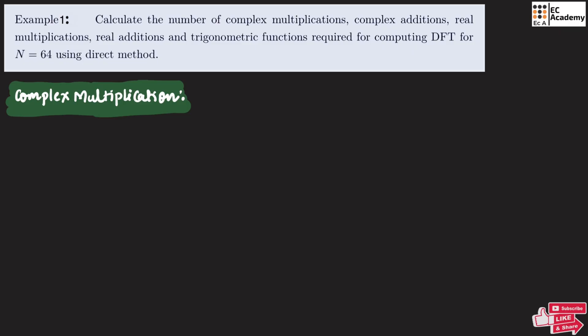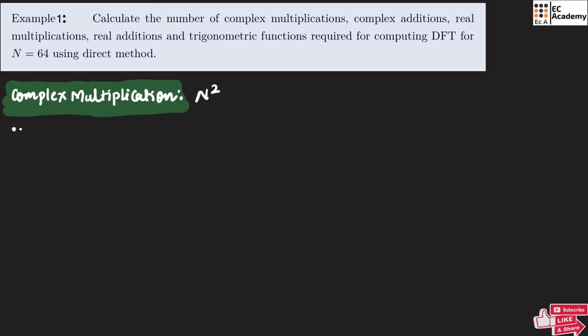In the previous video, we have already understood the different formulas for complex multiplication, complex addition, real multiplication, real additions, and also the formula for trigonometric functions. First, let us calculate the complex multiplication. For an n-point DFT, the complex multiplication is given by the formula n². Since n equals 64, the complex multiplication will be 64², so the number of complex multiplications required is 4096.